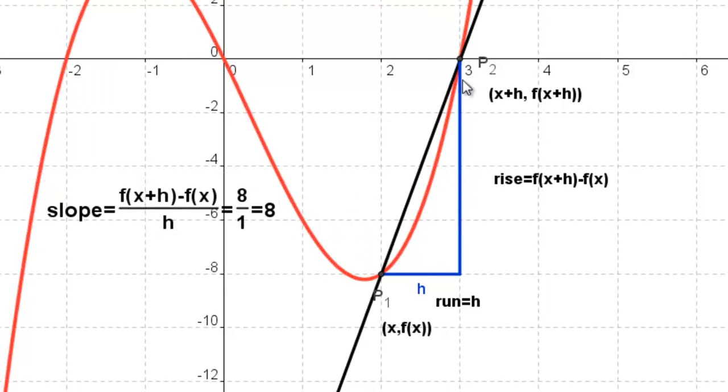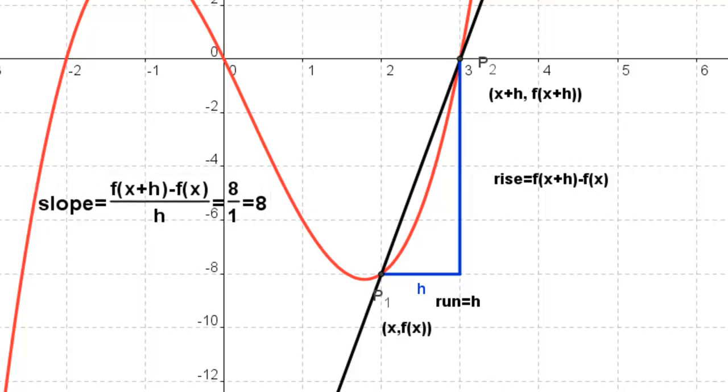And right now I am happy, happy, happy because my slope is eight. Well, here we go. Let's try and find the instantaneous rate of change at this point right here, which is two and negative eight.